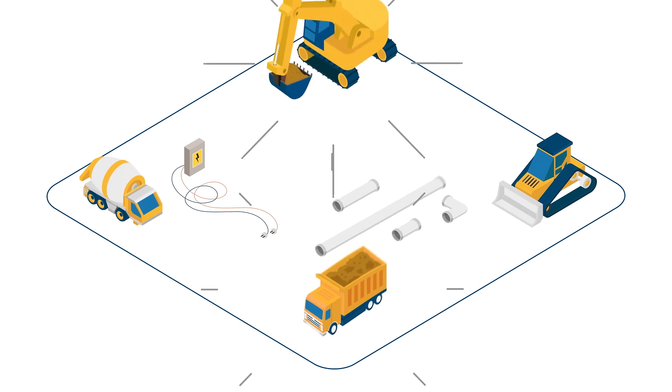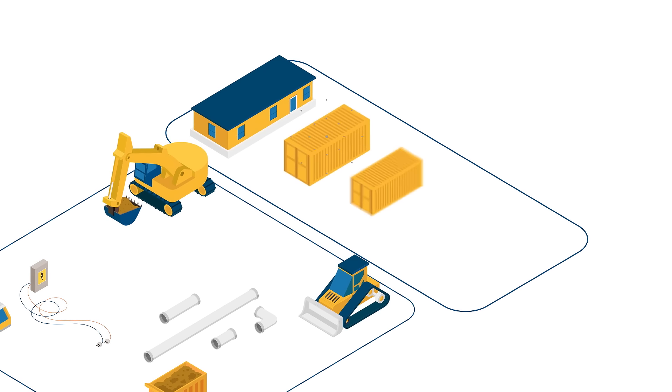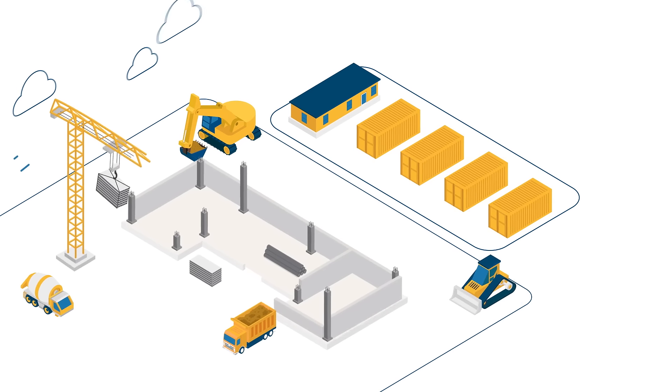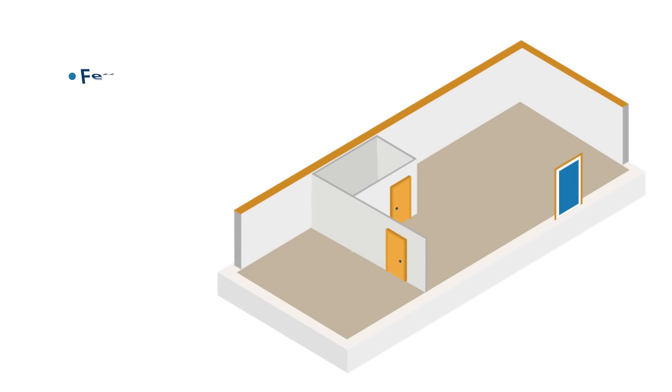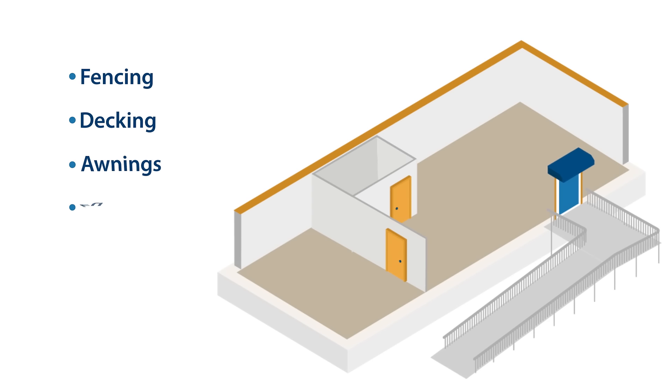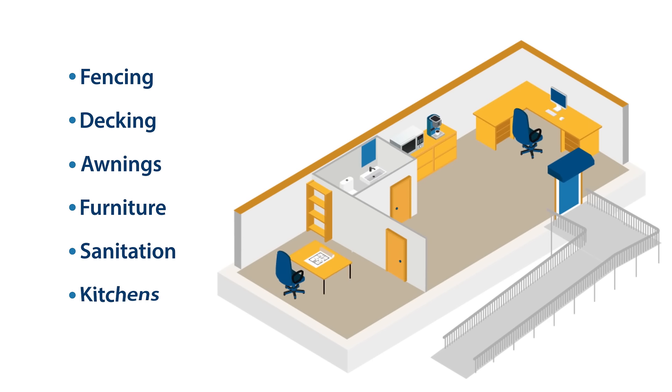From grading, electrical and plumbing to job site offices and storage, Mobile Modular solutions is your one-stop shop and now we have expanded offerings like fencing, decking, awnings, furniture, sanitation and even kitchens.